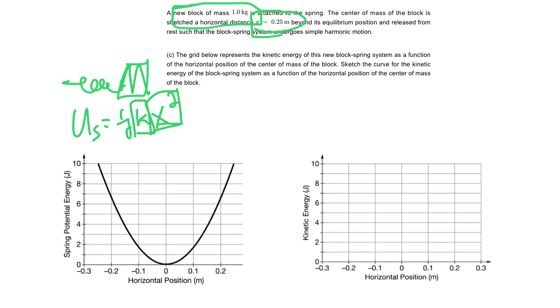Well, remember, the US, as this block is going back and forth, essentially what you're doing is you're changing US to KE, and vice versa. Actually, it starts with US max, right? And then it's going to turn into both as you're moving, and then it's going to turn into KE max, et cetera, et cetera.